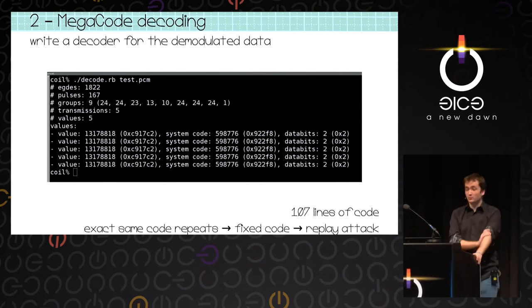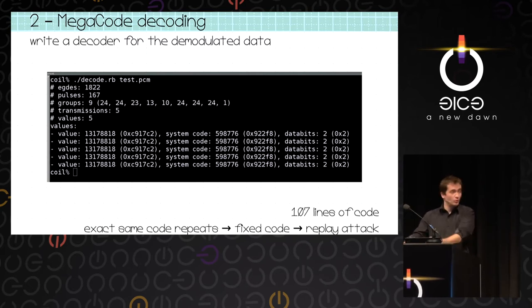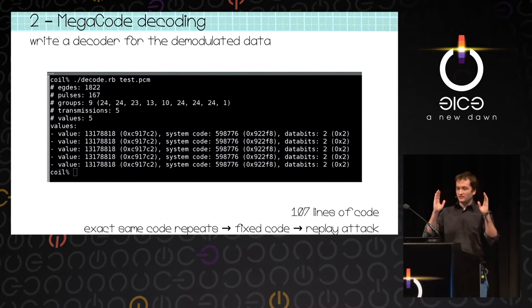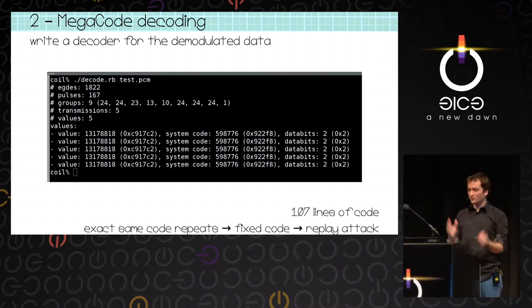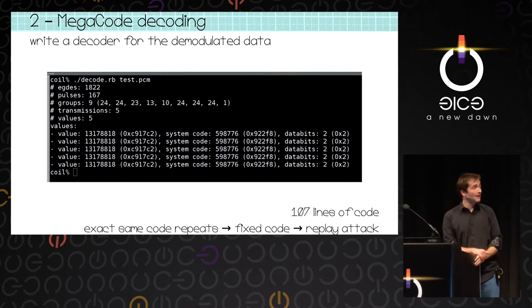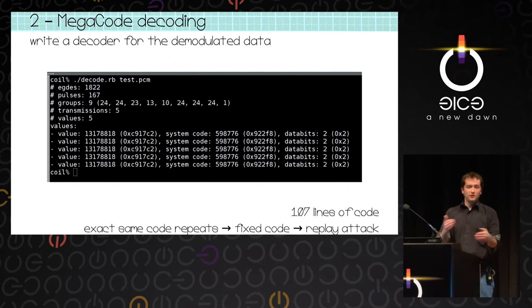We know how it's encoded, so we write a program that takes the demodulated data and finds out the code. It's pretty short — 107 lines of code. It detects the edges, groups them into pulses of 1 ms, then groups the pulses into groups of 24 and decodes. We can see the decoded 24-bit value — the three bytes. We immediately see it's exactly the same code every time. It's individual per remote, but it's always the same. So we have a replay attack: if we can record it and send it, we have a clone of the remote.